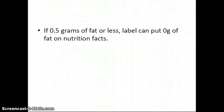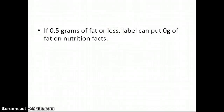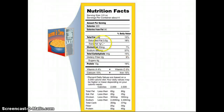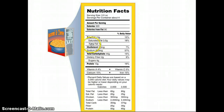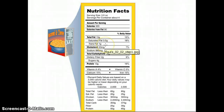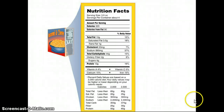One thing I forgot to mention about fat: if there's half a gram of fat or less — and this goes for other nutrients as well — the label can put zero grams on the nutrition facts. Oftentimes you'll see products marketing themselves as having no fat or no trans fat, but they might have a little bit per serving. If you're having a lot of servings, that might add up, so the nutrition facts can sometimes be a little deceiving.